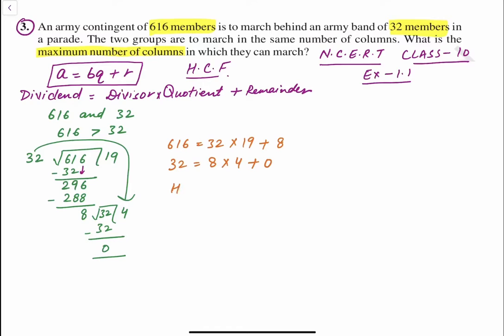Now we know that the highest common factor of 616 and 32 is 8. Remember how this is 8, because 8 is the divisor of the last step. So basically we have to see the last step only, and the last step is the divisor that is our 8. So 8 will be the HCF. So this will be the answer.